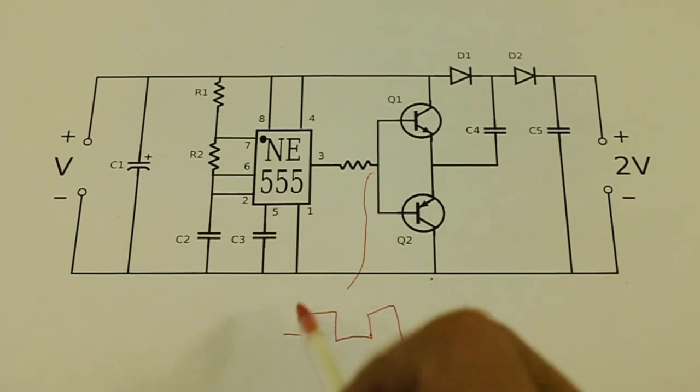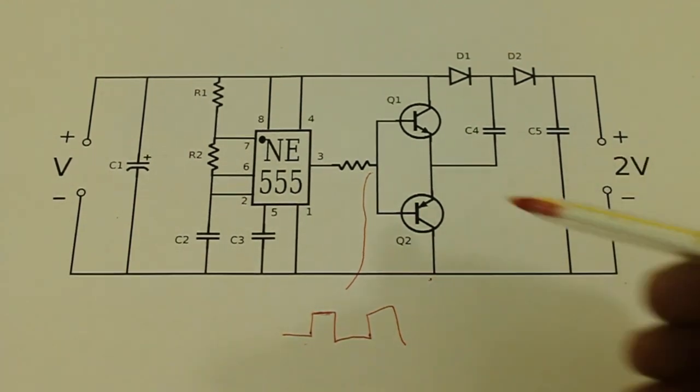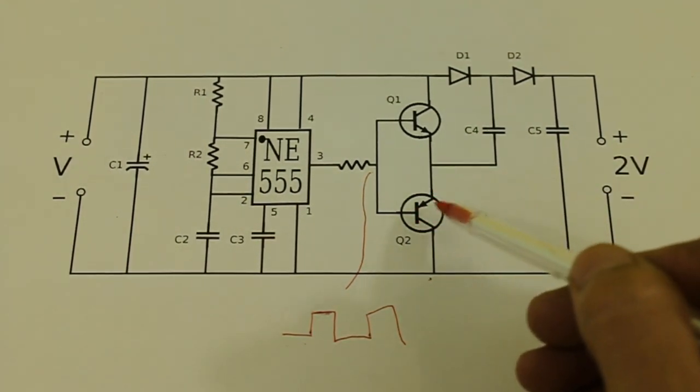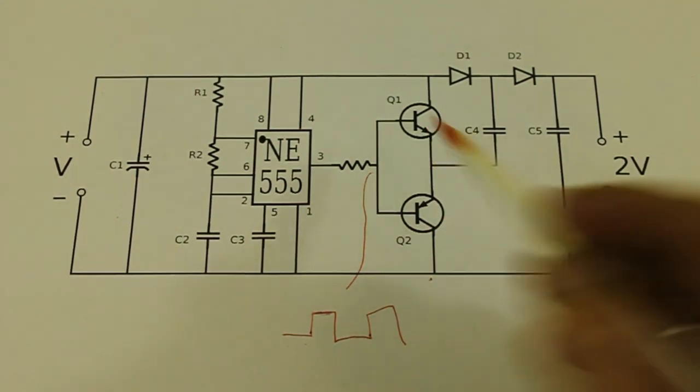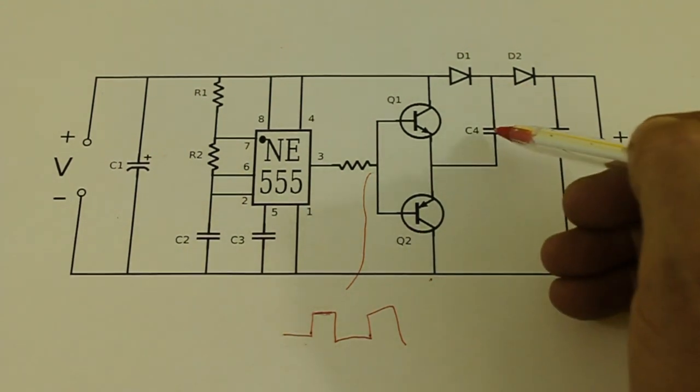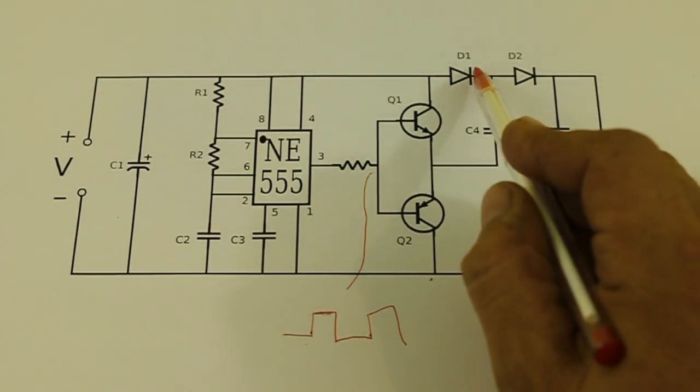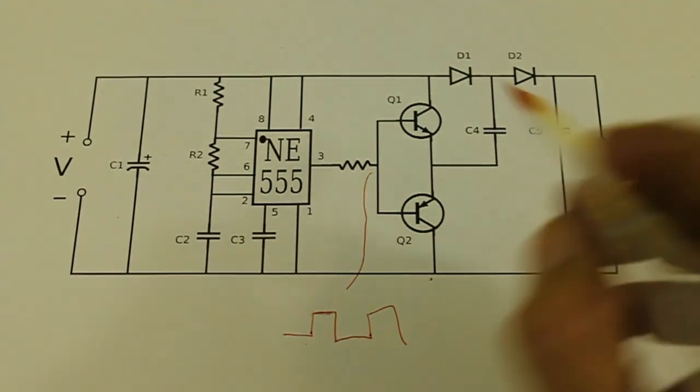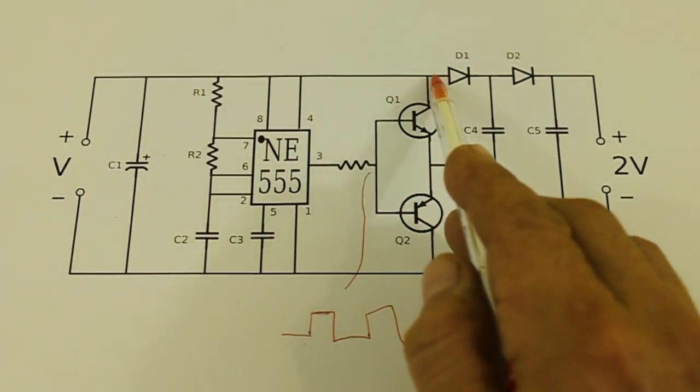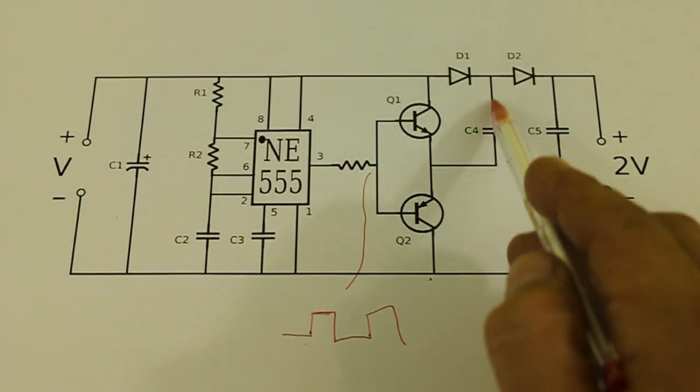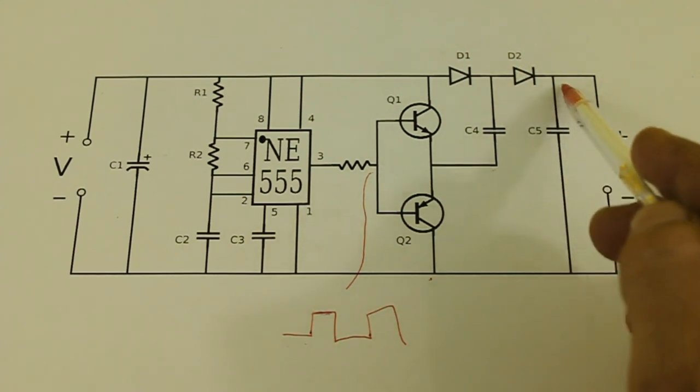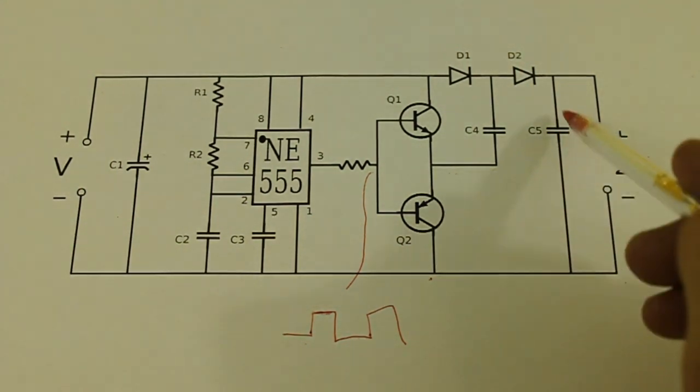Then the train goes to the high voltage part of the pulse and the PNP transistor does not conduct but the NPN conducts. Now this capacitor cannot discharge because it is blocked by this diode. Now the current can flow here through the NPN transistor and from this capacitor, charging the last capacitor.